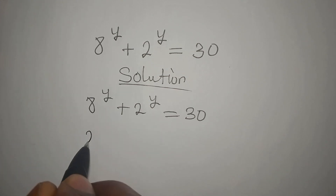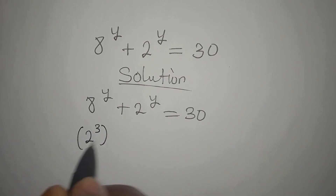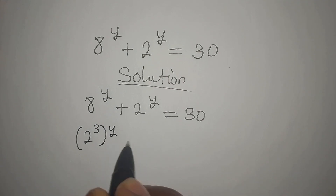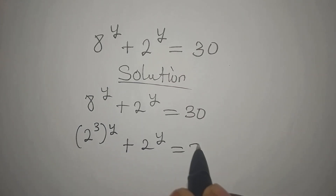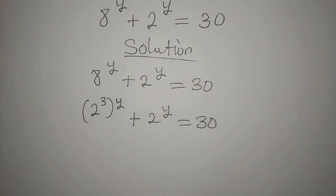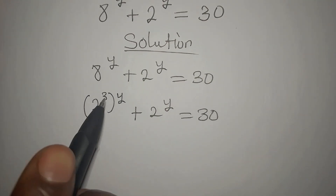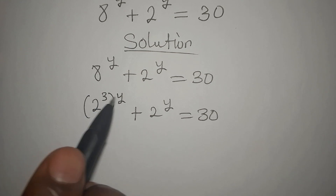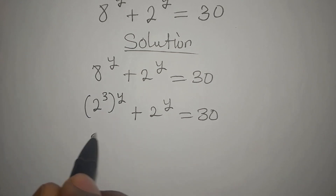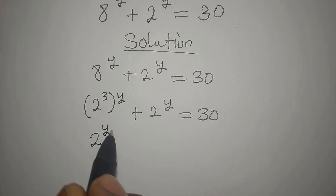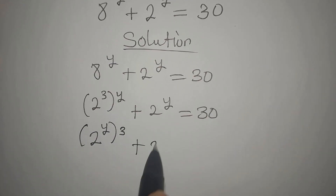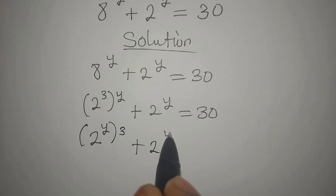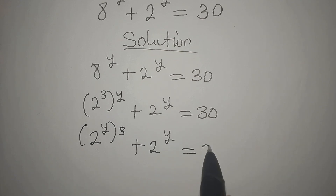So, 8 is 2 to the power of 3, then we have y outside, plus 2 to the power of y equals 30. The next thing I'm going to do is changing the position of the power here, so that we can have 2 to the power of y to the power of 3, plus 2 to the power of y equals 30.